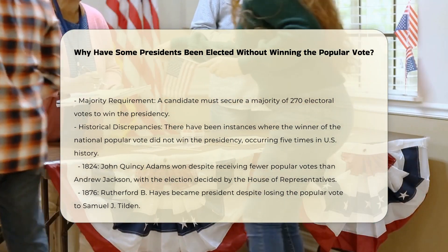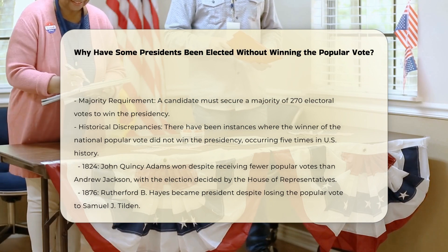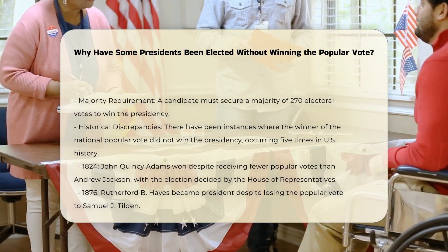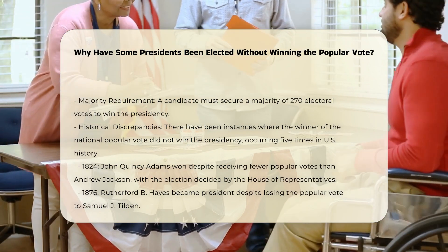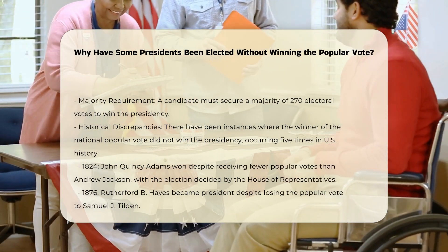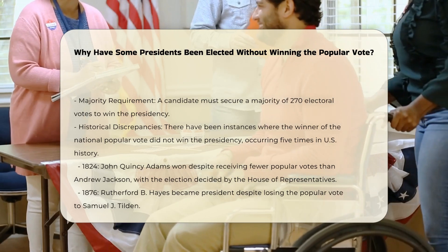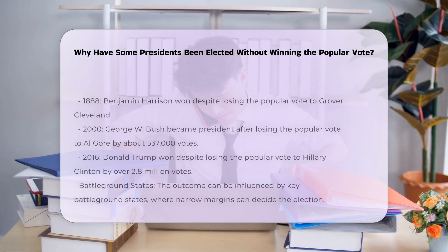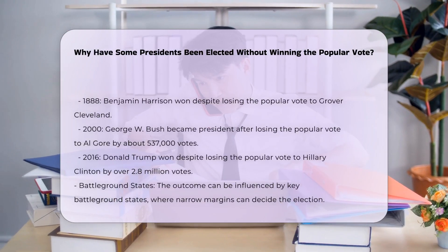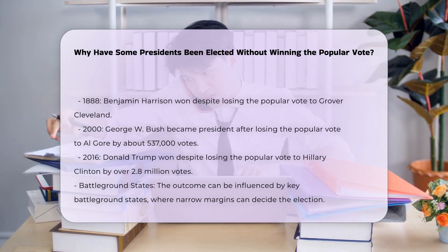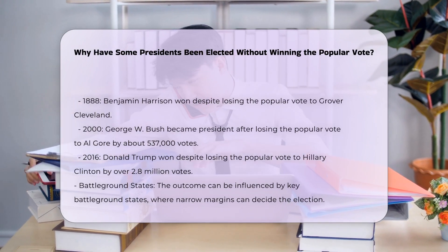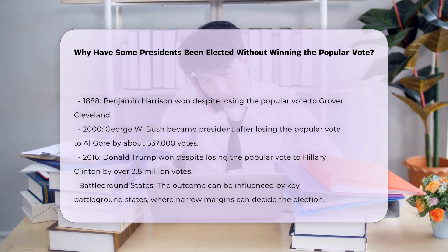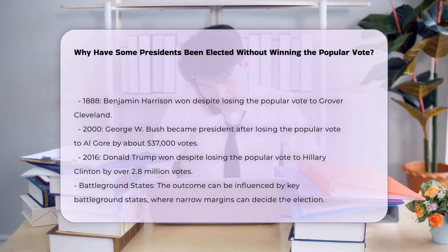This system can lead to a situation where the winner of the national popular vote does not win the presidency. This has happened five times in U.S. history. First, in 1824, John Quincy Adams won the presidency despite receiving fewer popular votes than Andrew Jackson. The election was decided by the House of Representatives because no candidate received a majority of electoral votes.